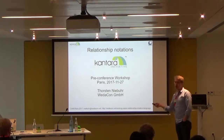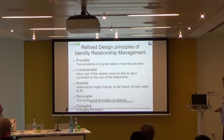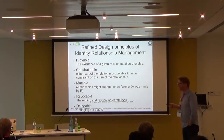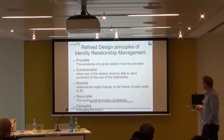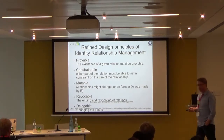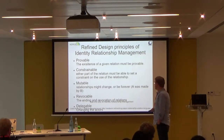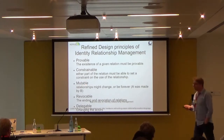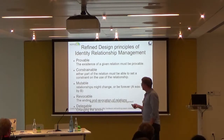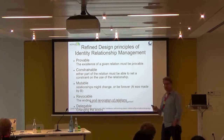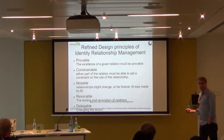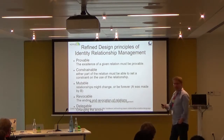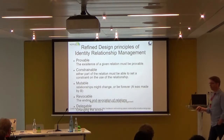I think it was in May or June, we finalized the document with five design principles of identity management with six design principles related to that. What we have identified — the six principles are, you can see it here, it's all in the document as well — the first is provable: make sure that a relationship can be proved. And the other way around, what happens if someone just declares a relationship to be there? How can I make sure that an unproved relationship can be removed? Which is also very important.